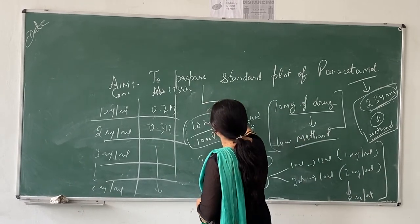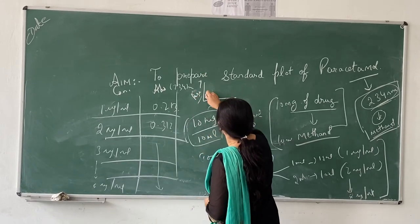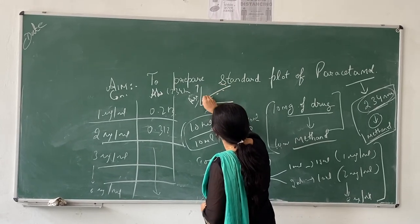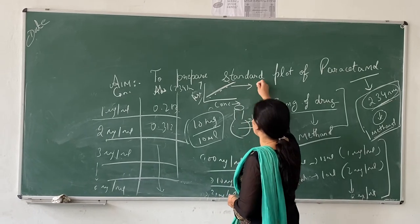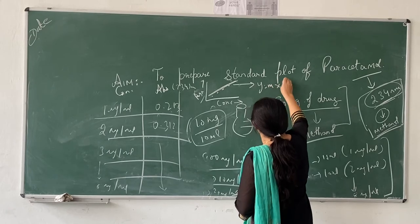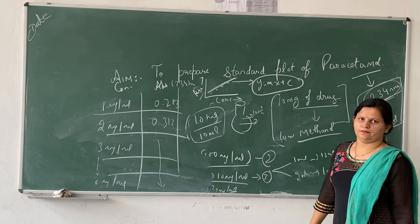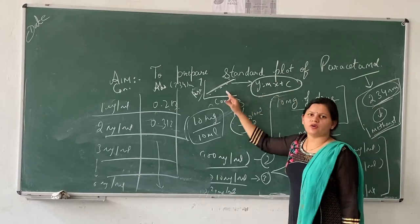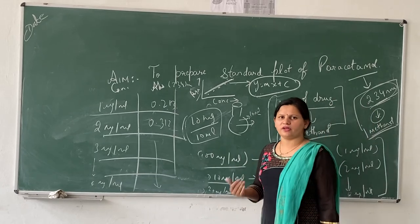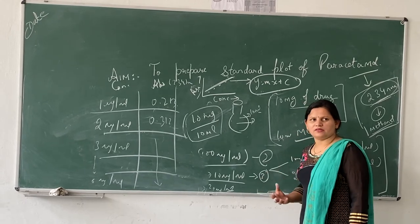We have to plot the graph between concentration and absorbance using Microsoft Excel. You will get a linear line through these points, and you have to determine its equation: y = mx + c. This is the standard plot of that drug. The equation y = mx + c is the standard plot, which can be utilized for further calculations of unknown sample concentrations.